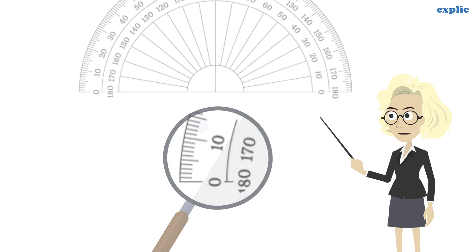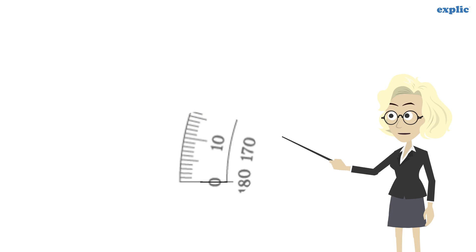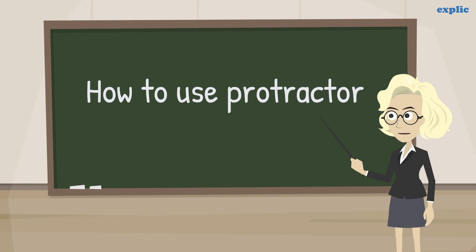Every small division of the protractor is equal to 1 degree. Let's learn how to use a protractor to measure an angle.